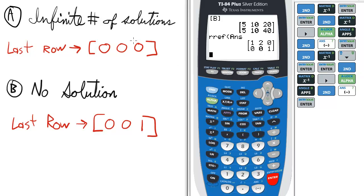So, again, infinite number of solutions, last row, all zeros. No solution, last row, 0, 0, 1. These are the two exceptions you run into about 5 to 10% of the time in matrices and systems of equations. See you next time.